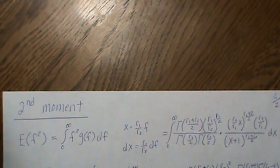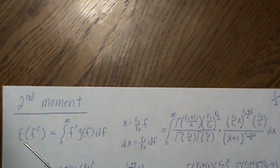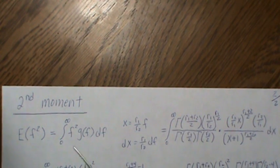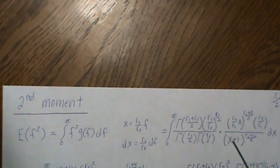Now let's look at the second moment. And we're going to skip one step here where we're looking at the expected value of f squared, which is this. You make this variable change, and you get to this.